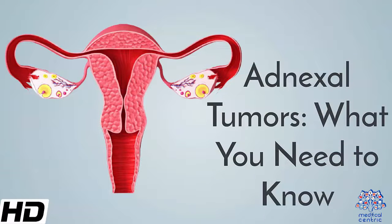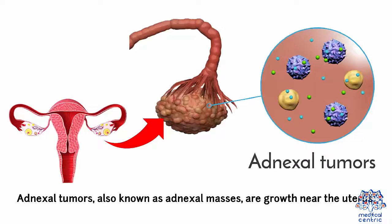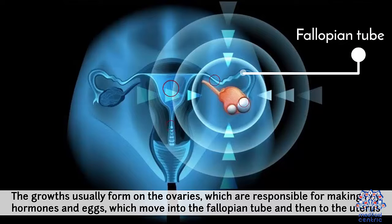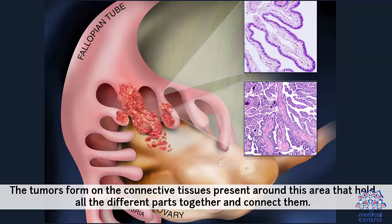Today's topic is adnexal tumors – what you need to know. Adnexal tumors, also known as adnexal masses, are growths near the uterus. The growths usually form on the ovaries, which are responsible for making key hormones and eggs, which move into the fallopian tube and then to the uterus. The tumors form on the connective tissues present around this area that hold all the different parts together and connect them.